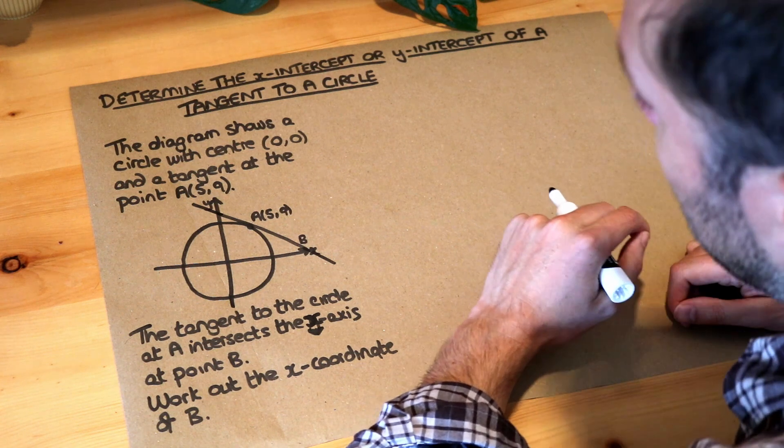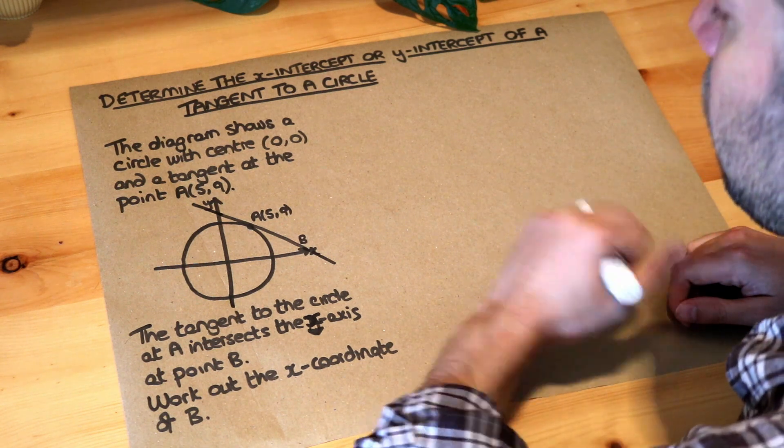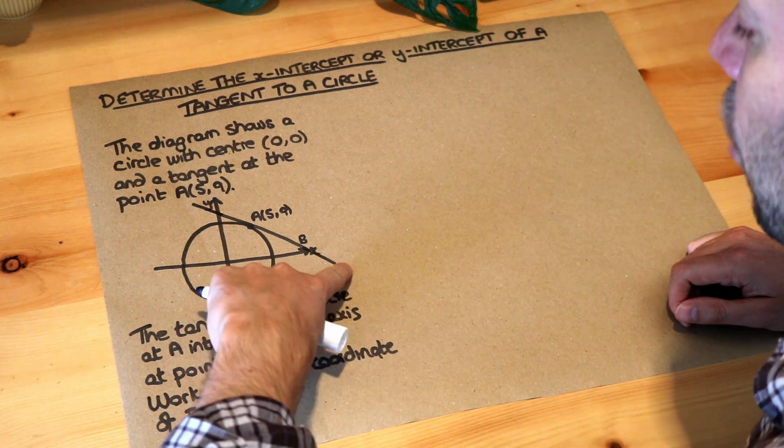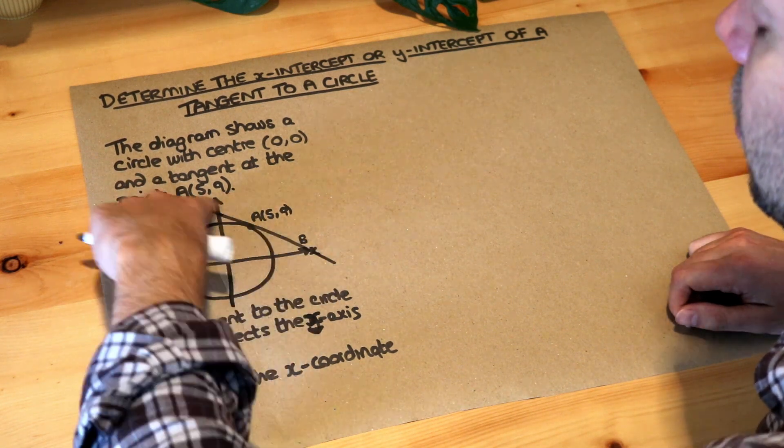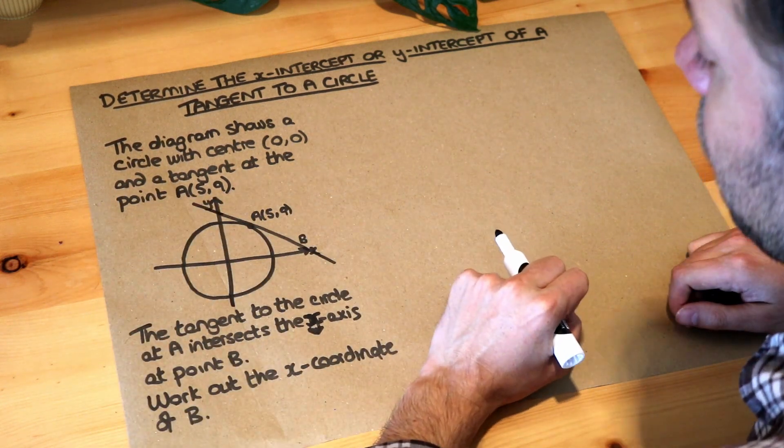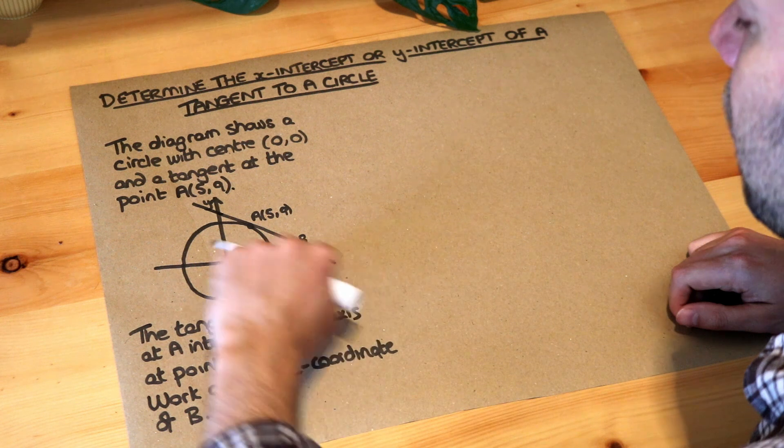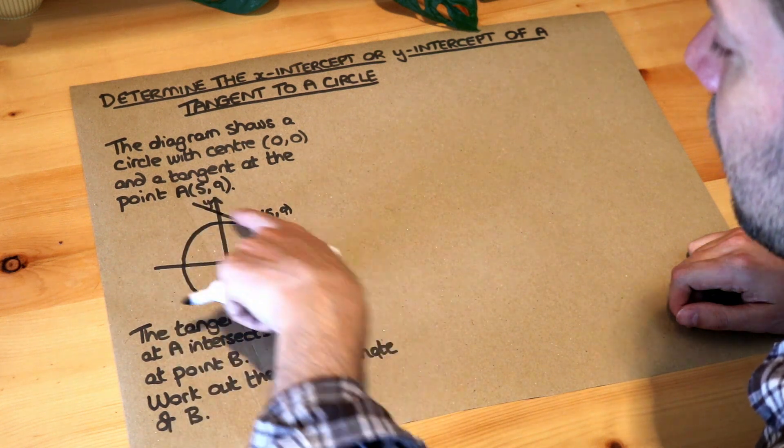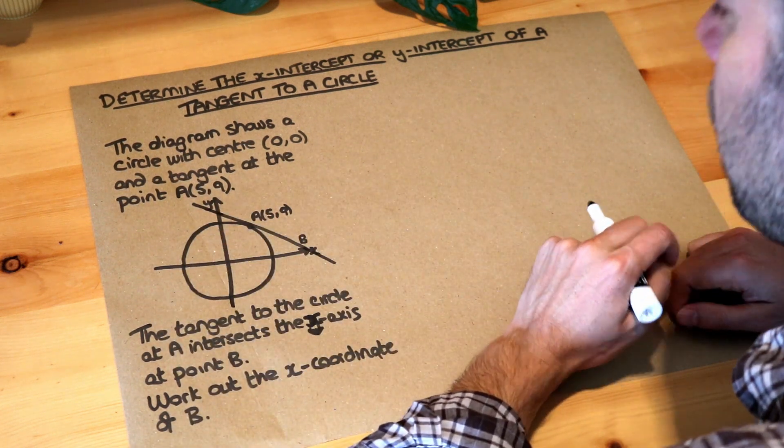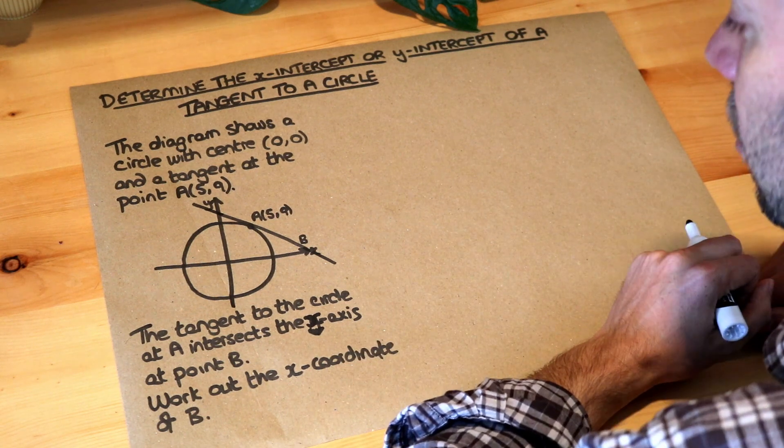Now this is just combining two skills that we've already encountered. We saw in a previous video how we can find the equation of a tangent to a circle, and we also saw that if we have the equation of a straight line how to work out the x-intercept or the y-intercept of that line. So we're just combining those two skills together.